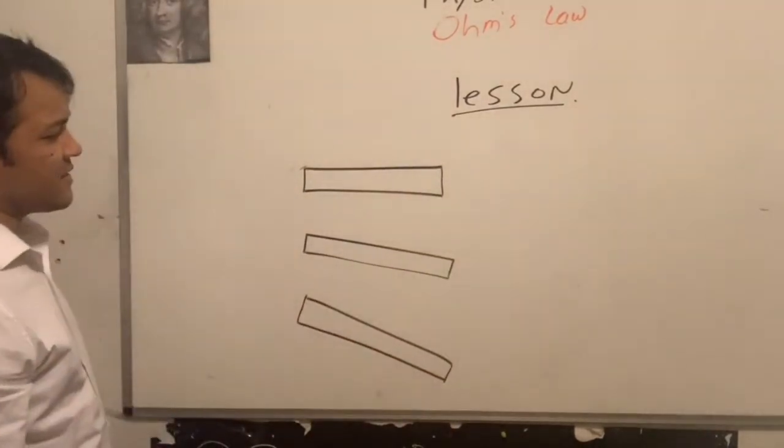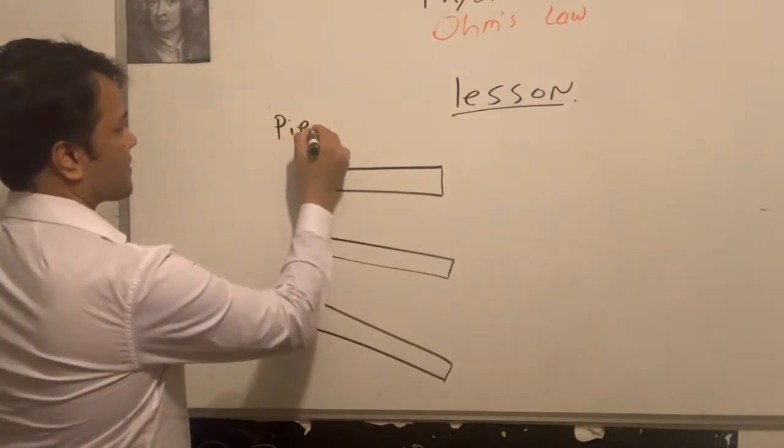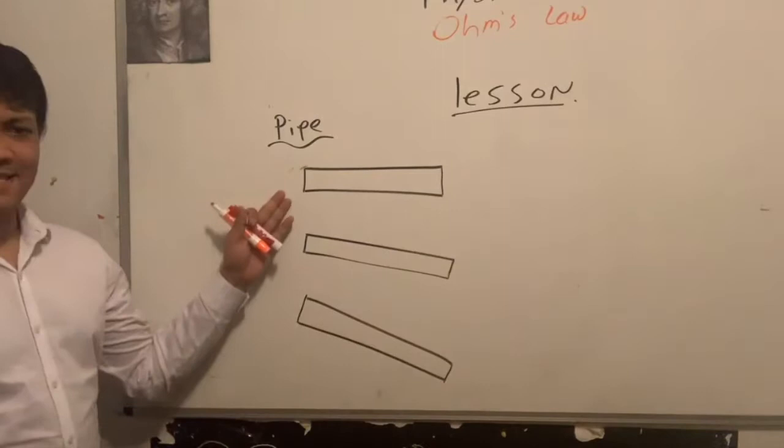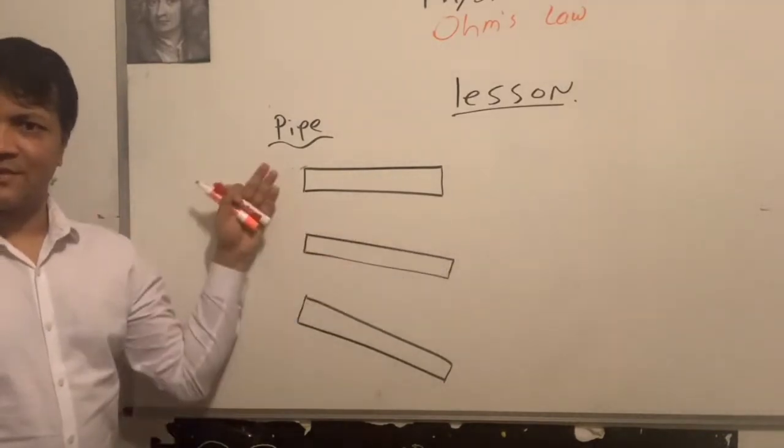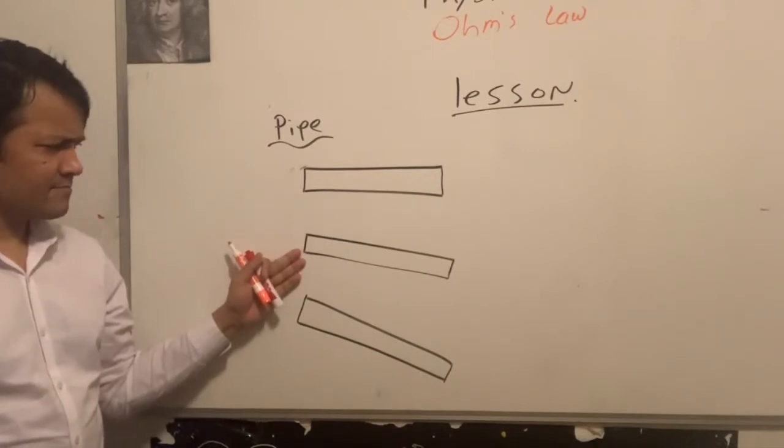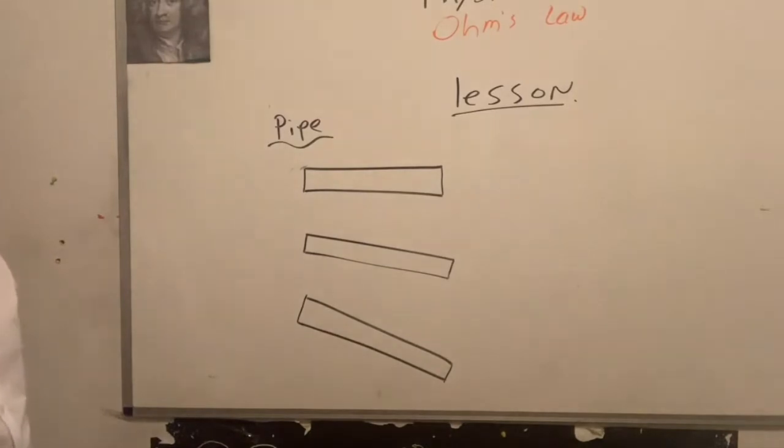So what are the differences between these three pipes? Orientation. Orientation. That means this is level. This is zero degrees with respect to the horizontal ground. This is like 15 degrees, I guess. And this is 60 degrees. Okay. So we got the idea.